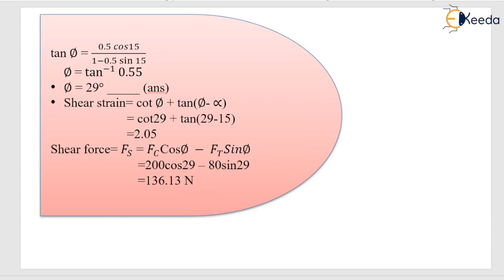For the shear strain, the formula is cot(phi) + tan(phi - alpha). With phi = 29 degrees and alpha = 15 degrees, substituting the values gives a shear strain of 2.05. The last part asks for the shear force.